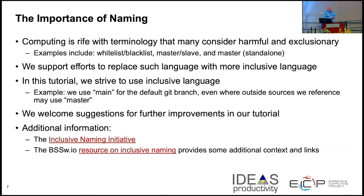Another thing we're striving to do is be more inclusive. Computing is rife with terminology that's considered harmful and exclusionary, and we support efforts to use more inclusive language. For example, the default branch for Git was often called master, but many projects and the Git maintainers themselves have replaced this, so the default is now main. We've tried to do some of these things in our tutorial, and there are links on this page to learn more. We also encourage you to let us know if you spot anything we need to fix.